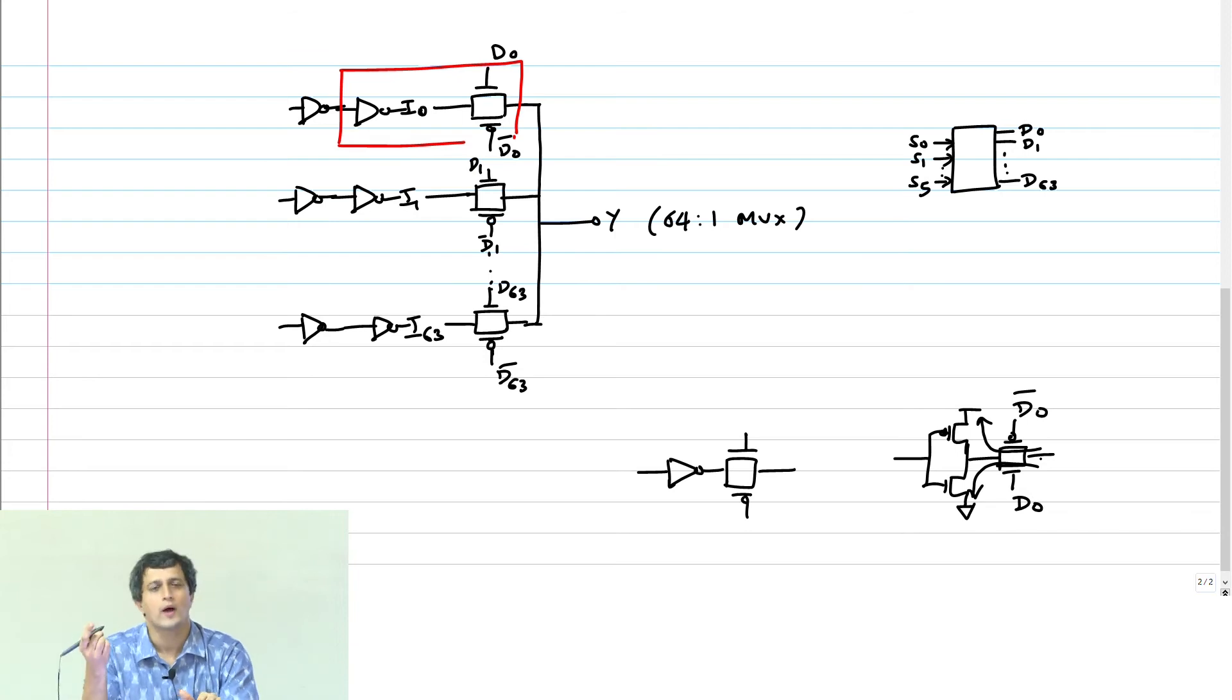So now I can even answer the question, what should the size of this PMOS transistor be or the NMOS transistor be in this transmission gate? So if this is let's say 1 and 2, what should the transmission gate's size be?